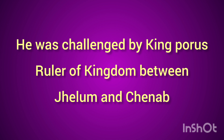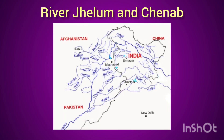He had to make war with Porus, who was ruling the areas between the rivers Jhelum and Chenab. In the Battle of Hydaspes, Porus had to face defeat at the hands of Alexander the Great.